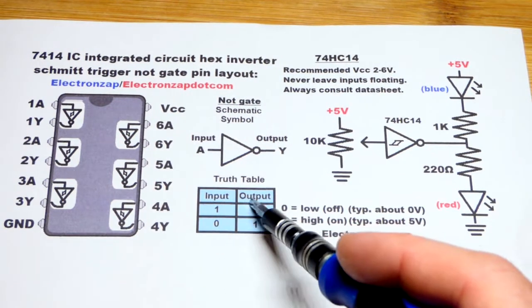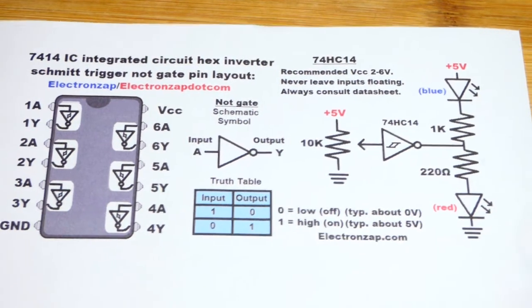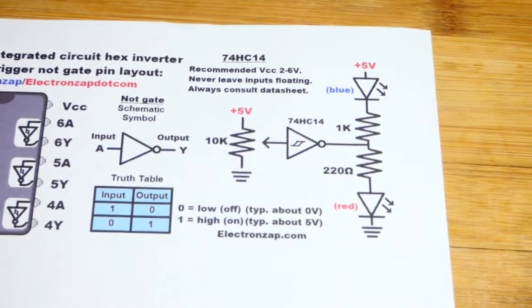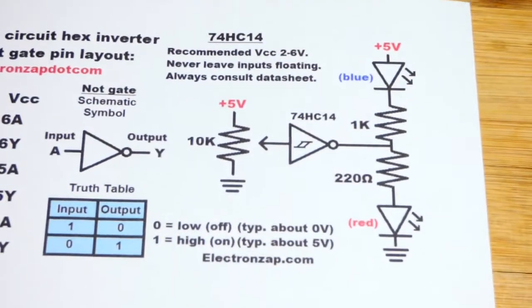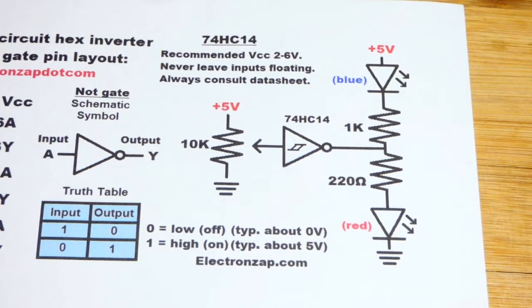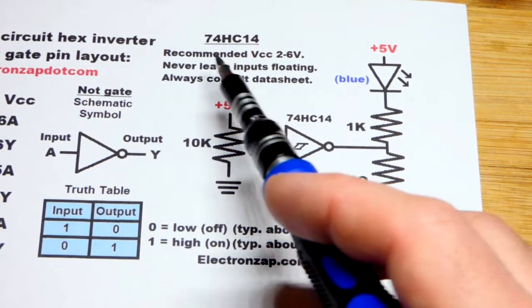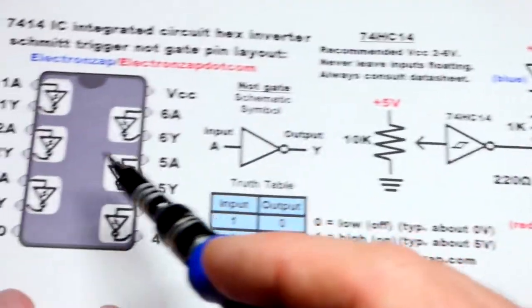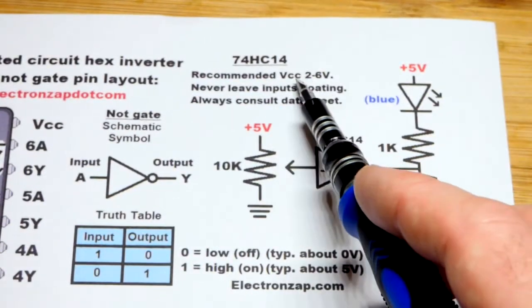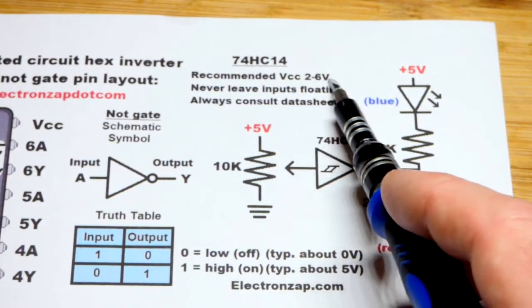Here's the truth table: input high, output low; input low, output high. I've gone over NOT gates or digital inverters before. The recommended voltage for this integrated circuit is two to six volts.